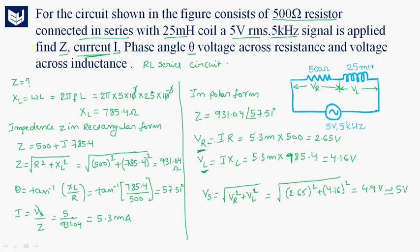To summarize, it was asked to find impedance, current I, phase angle theta, and voltages across resistance and inductance. The value of Z is 931.04 ohms. Current is 5.3 milliamperes. Phase angle theta is 57.51 degrees. Voltage across resistance VR equals 2.65 volts. Voltage across inductance VL equals 4.16 volts.